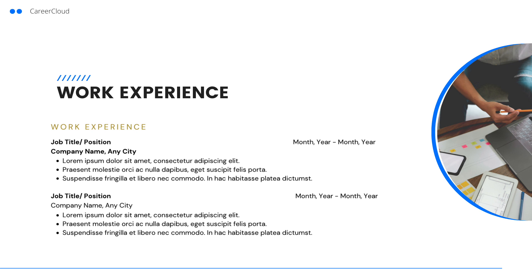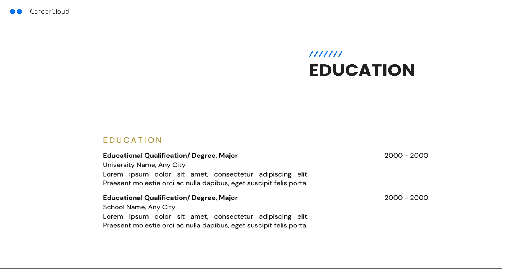Next, list your work experience. You should list your professional roles in reverse chronological order beginning with your current or most recent job. That way, your latest successes are right at the top of this section. For each job, include your title, the company's name, and the dates you worked there. Then write several bullet points to share your accomplishments while in that position.